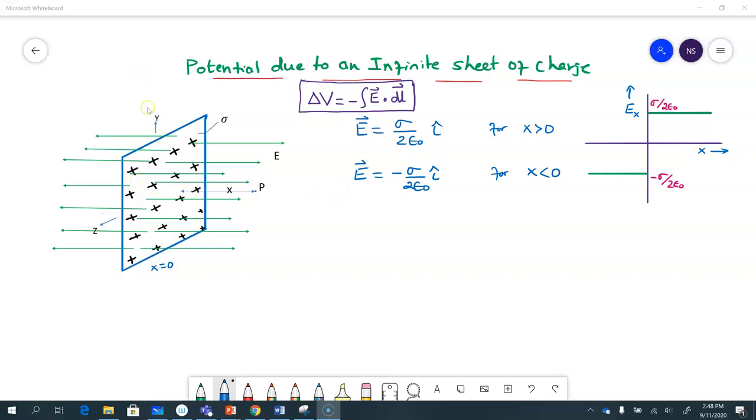And then y is upward. So we already know everything there is to know about the electric field here. We know it's uniform, it's a constant as long as you don't go too close to the edges of the sheet, and it's a large sheet anyway. So we have seen that the electric field, if it's a non-conducting sheet, it's sigma over 2 epsilon 0, points to the right to the right of it, and points to the left to the left of it.